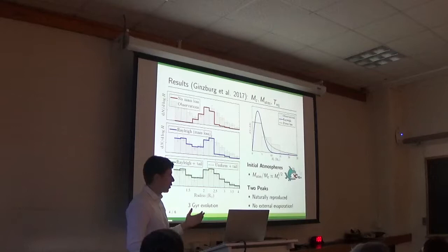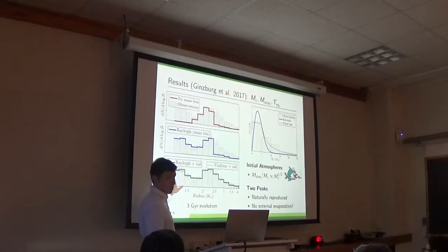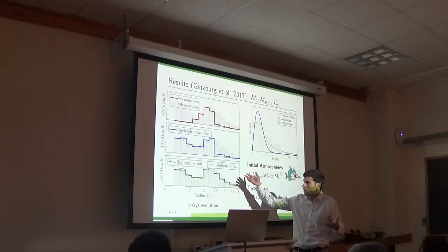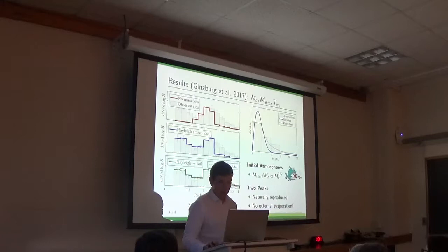When we allow for mass loss due to the cooling of the core, then we get this bottom green model. And you can see that we get both peaks. We get both the right peak, which is planets that keep the atmospheres, and the left peak, which is planets that lost the atmospheres. So you can see that we can quite easily, we didn't have to tune parameters here. So we can quite easily reproduce the observed distribution without invoking some external irradiation source.